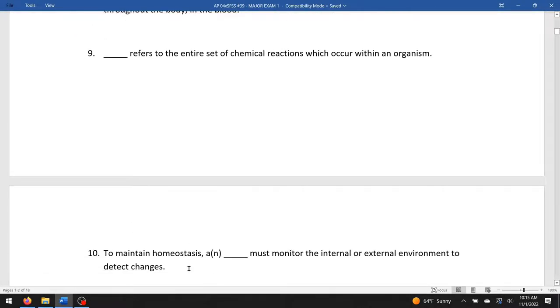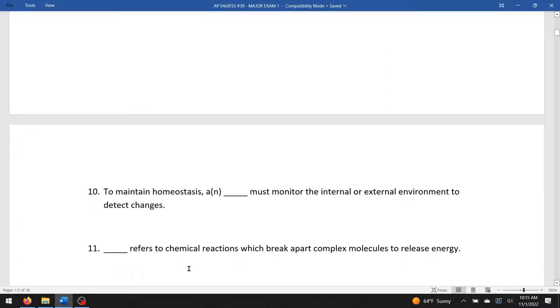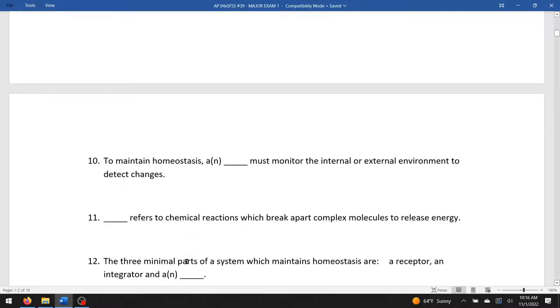To maintain homeostasis, a blank must monitor the internal or external environment to detect changes. That would be a receptor, the first part of the homeostatic control mechanism. Blank refers to chemical reactions which break apart complex molecules and release energy. So anytime you're breaking, you're talking about catabolism. Three minimal parts of a system which maintains homeostasis are the receptor, the integrator, and the effector.